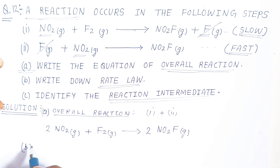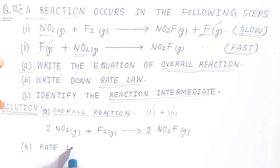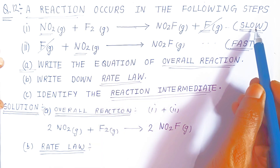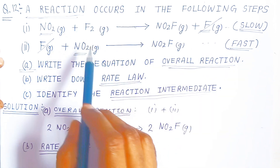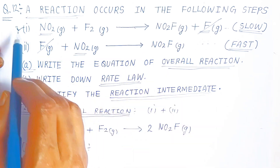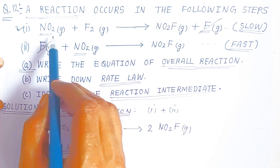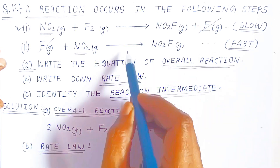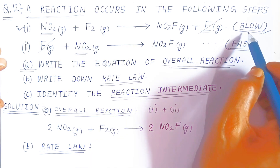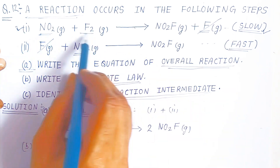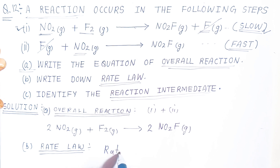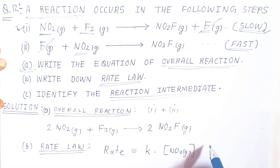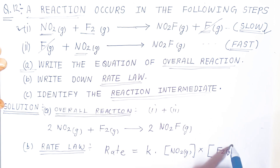Now for the rate law: you must identify the slow reaction — you can only apply the rate law to the slow step. Step one is the slow reaction, so you apply the rate law to its reactants. There are two reactants, so: Rate = k [NO₂][F₂]. This is the rate law for this reaction.